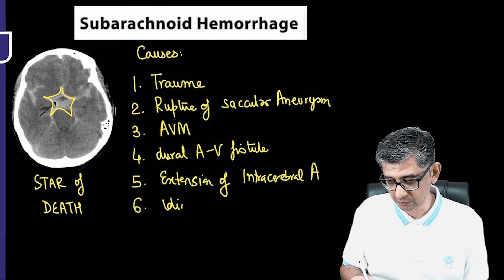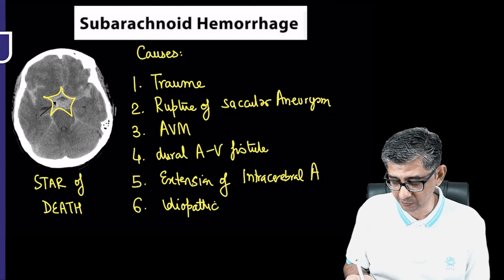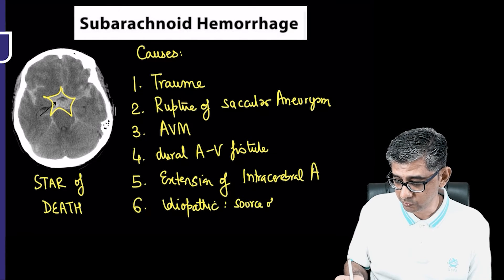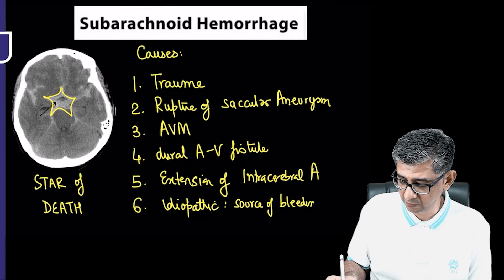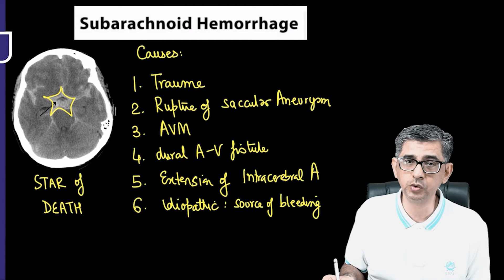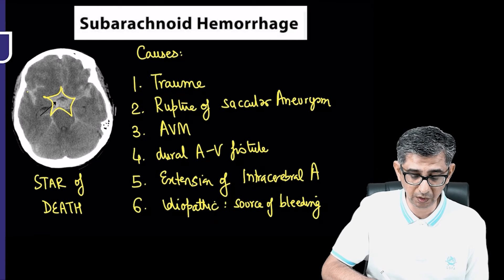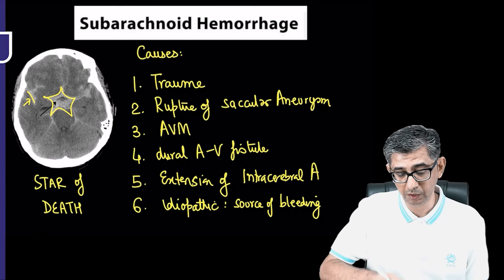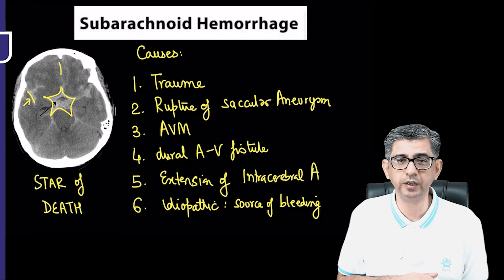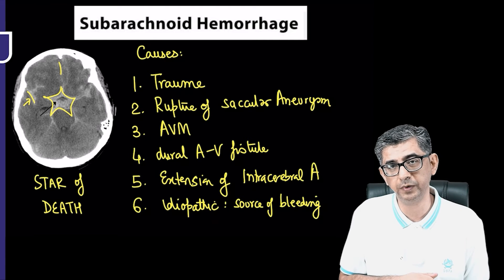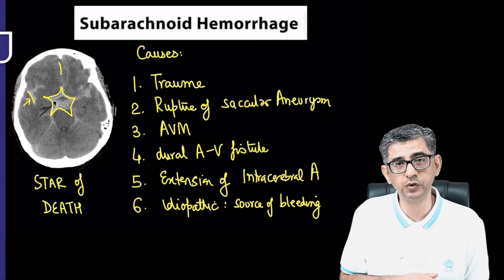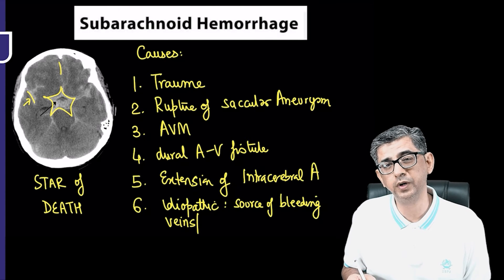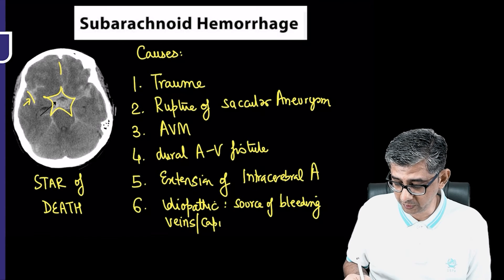Point number six looks surprising at first: it is idiopathic subarachnoid hemorrhage. The issue is not with the word 'idiopathic' but with the source of bleeding. If a person has blood in the Sylvian fissure, the source would be the middle cerebral artery. If blood is in the interhemispheric fissure, it relates to anterior vessels like the anterior communicating artery. So the source is routinely arterial — but for the idiopathic variety, which has a benign course, the source of bleeding is veins or capillaries.